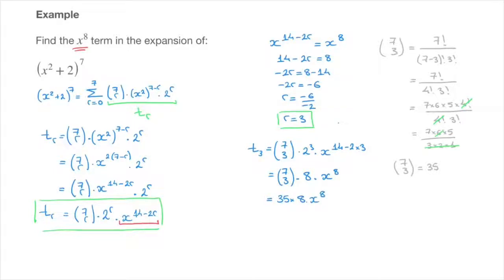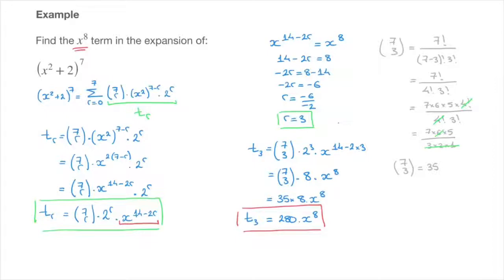And 35 times 8 equals 280, multiplying x to the power of 8. That's the final answer. We've just found the x to the power of 8 term inside this binomial expansion without writing all of the terms.